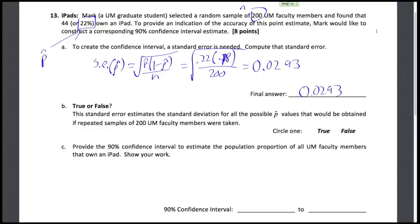True or false: this standard error estimates the standard deviation for all the possible p-hat values that would be obtained if repeated samples of 200 UM faculty members were taken. This is true — it is an estimate, because we don't know the true p, the true proportion of faculty members that own an iPad. If we knew that, we would have the true standard deviation for p-hat, but because we don't, we're using an estimate, which makes our standard error an estimate of that standard deviation.